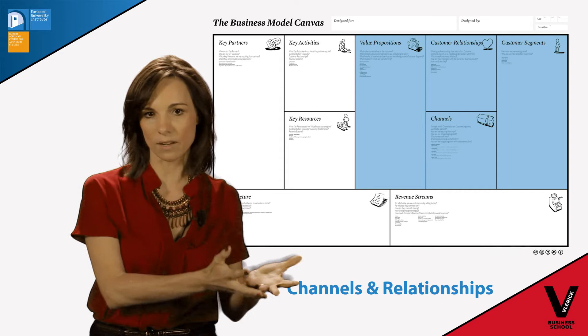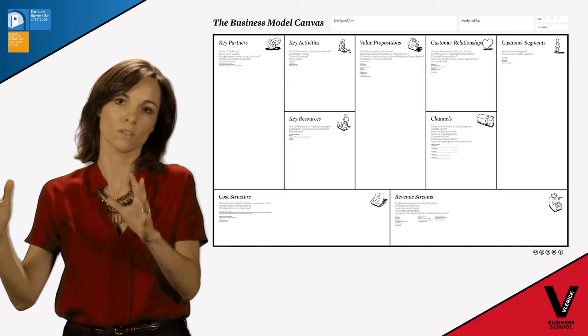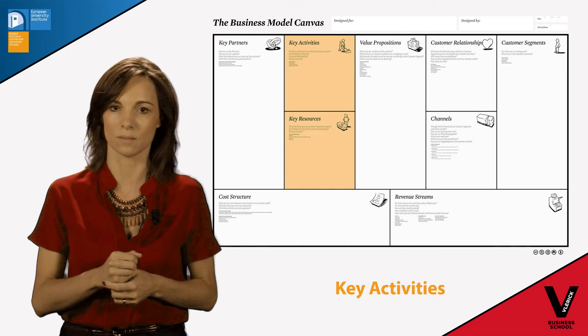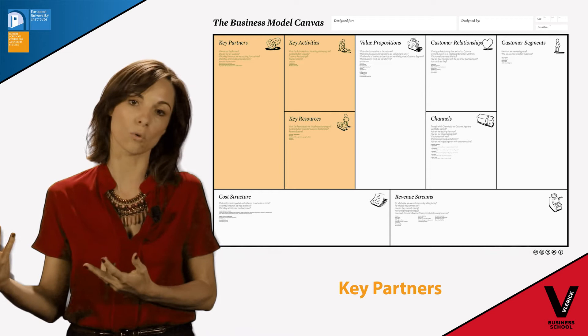If we move to the left, we go to the internal side, which defines what are the key resources that are required in this business model, what are the key activities or capabilities that are required in this business model, and third, who are the partners that we need or that we work with within this business model? That's the internal side.